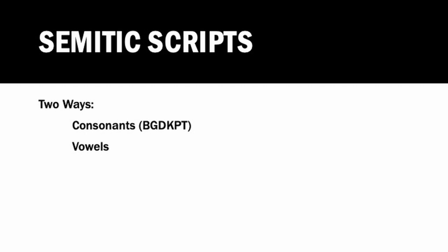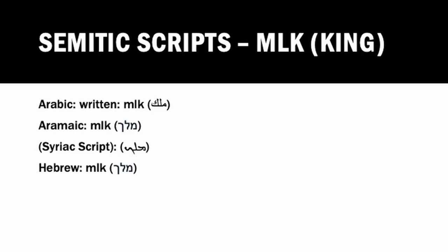Now let's move on to vowels. It means these languages are written with consonants and not with vowels, at least originally. In time, writing systems developed ways to compensate for this by adding diacritical marks. These marks indicate the vowel quality to us. We're going to look at the three languages — Arabic, Aramaic, and Hebrew — with the three letters mim, lamed, kap, or MLK.